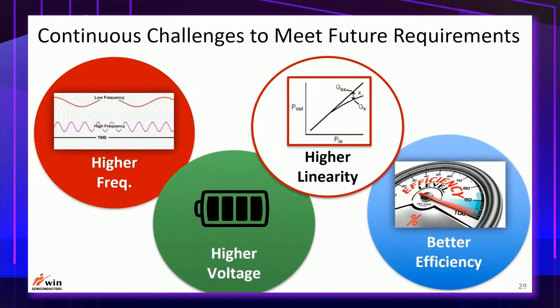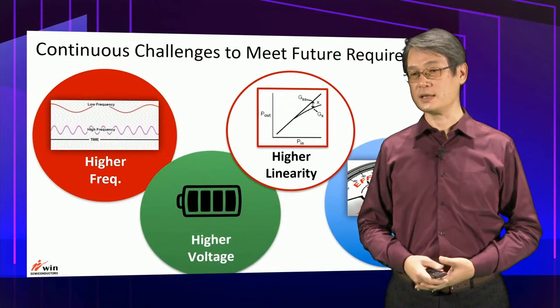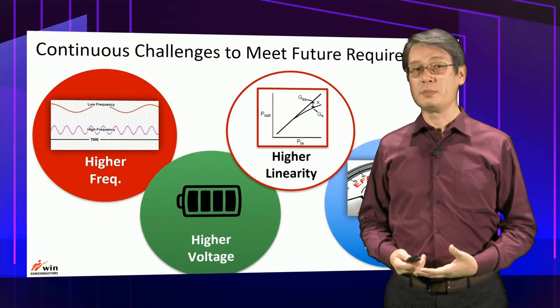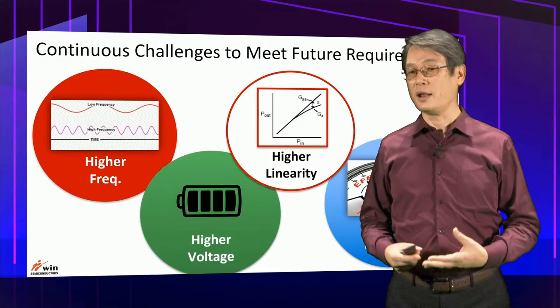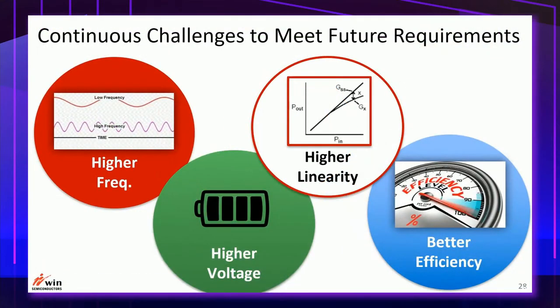At the semiconductor device level, these challenges translate into requirements for high-performance transistor technology to operate at high frequency, higher linearity performance to amplify higher-order modulation signals, higher operating voltage to transmit more power over longer range, and improved power efficiency to reduce power consumption — particularly for power amplifiers.